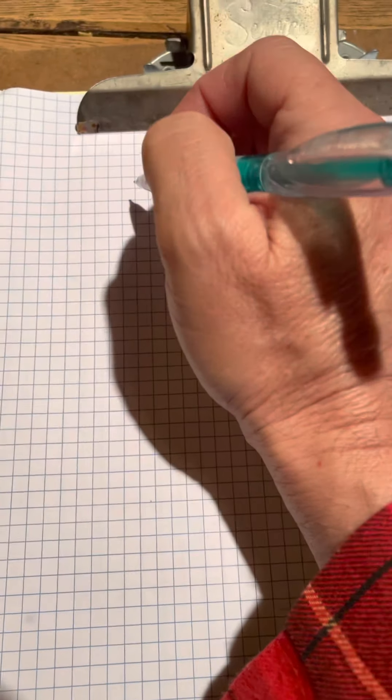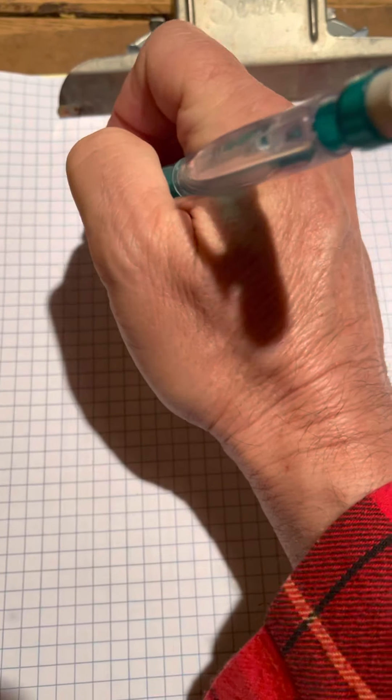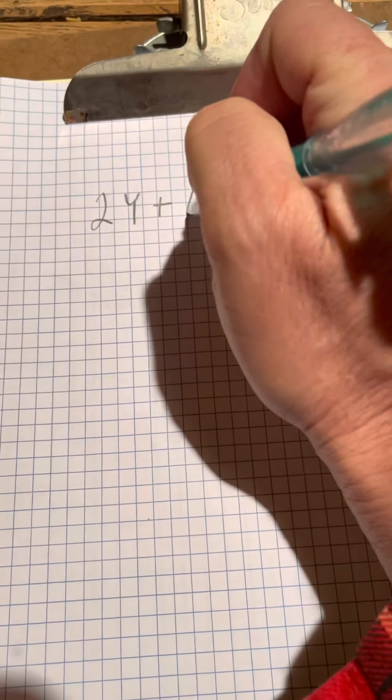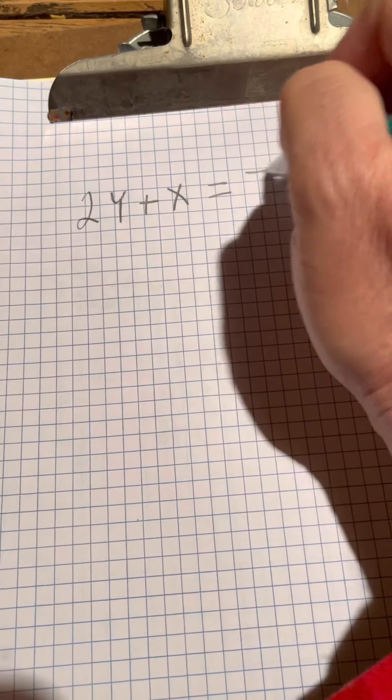We want to get the x or the y by itself. So if you have something like this, 2y plus x equals 7.